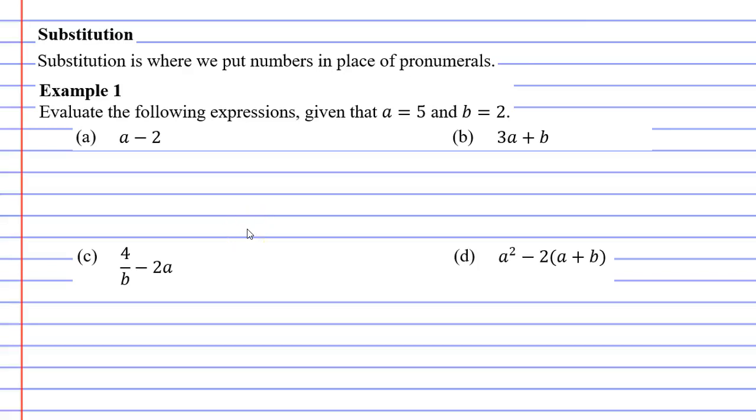In this video we're going to complete example one which is all about substitution. The word substitution basically means to replace, and what we're replacing is numbers in place of pronumerals. When we look at example one it says evaluate the following expressions given that a equals 5 and b equals 2.